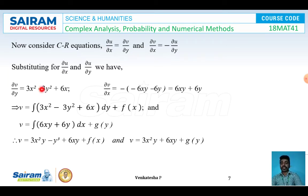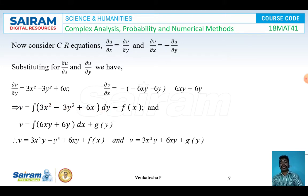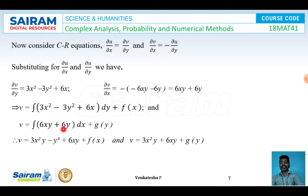Integrating ∂v/∂y = 3x² − 3y² + 6x with respect to y, treating x constant, and integrating ∂v/∂x = 6xy + 6y with respect to x, treating y constant. From the first integral: v = 3x²y − y³ + 6xy + f(x). From the second integral: v = 3x²y + 6xy + g(y).